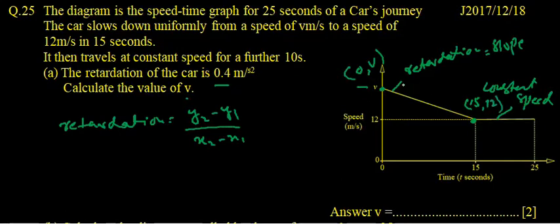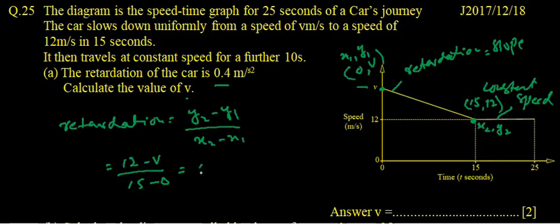So the two coordinates are there. When you find the slope it will be the retardation. So y2 is 12 minus V upon 15 minus 0. So 12 minus V and 15 minus 0 is equal to 0.4 meters per second. And it is retardation so it is in minus.